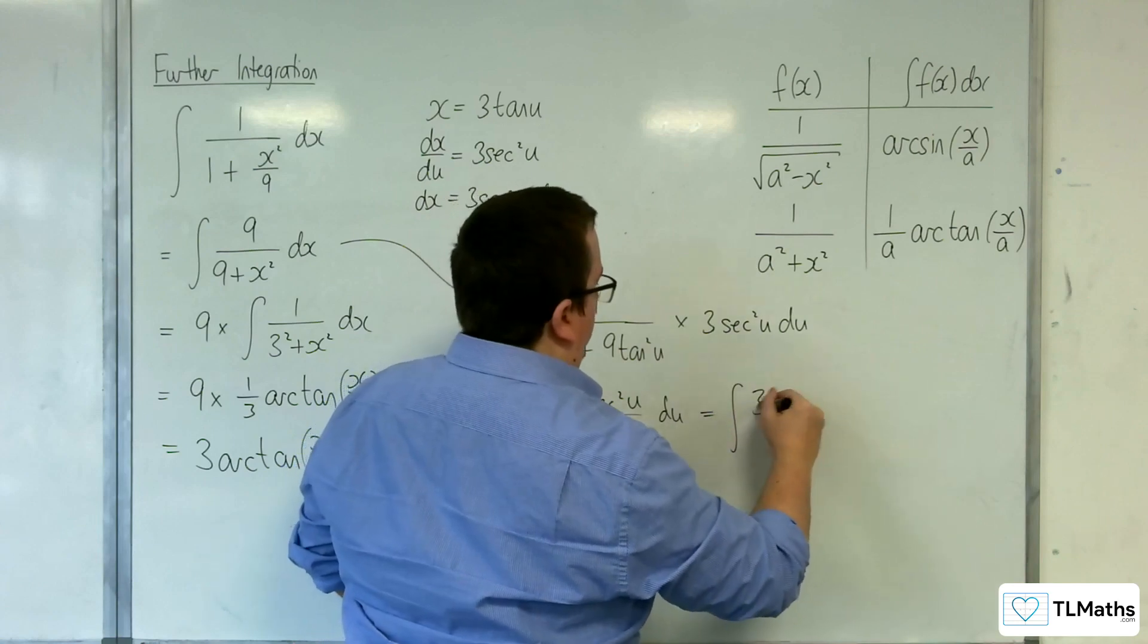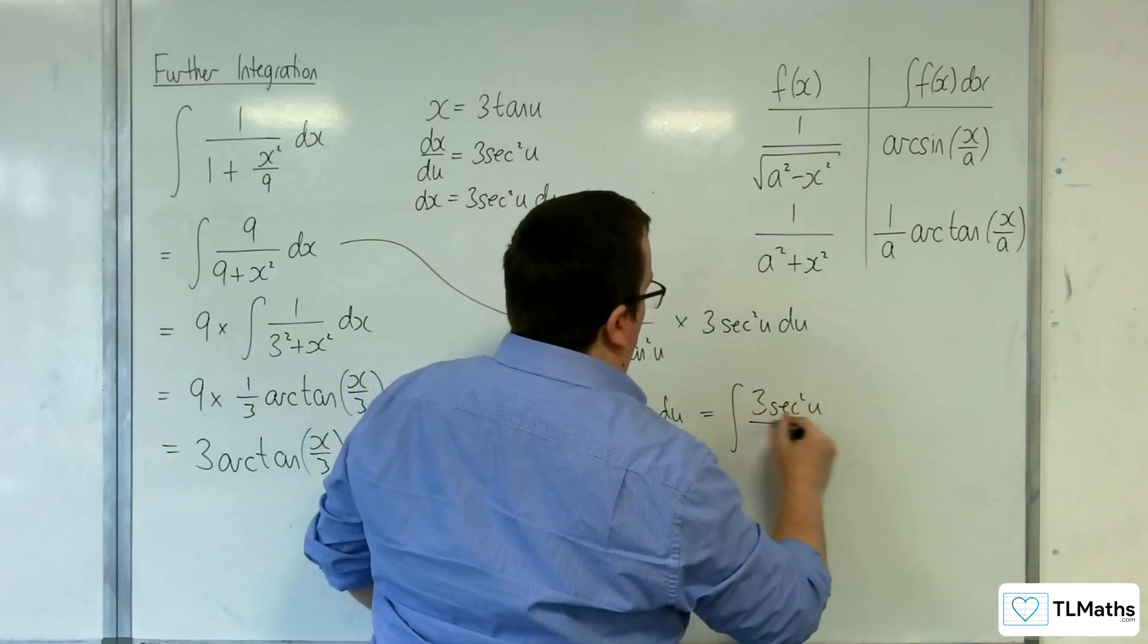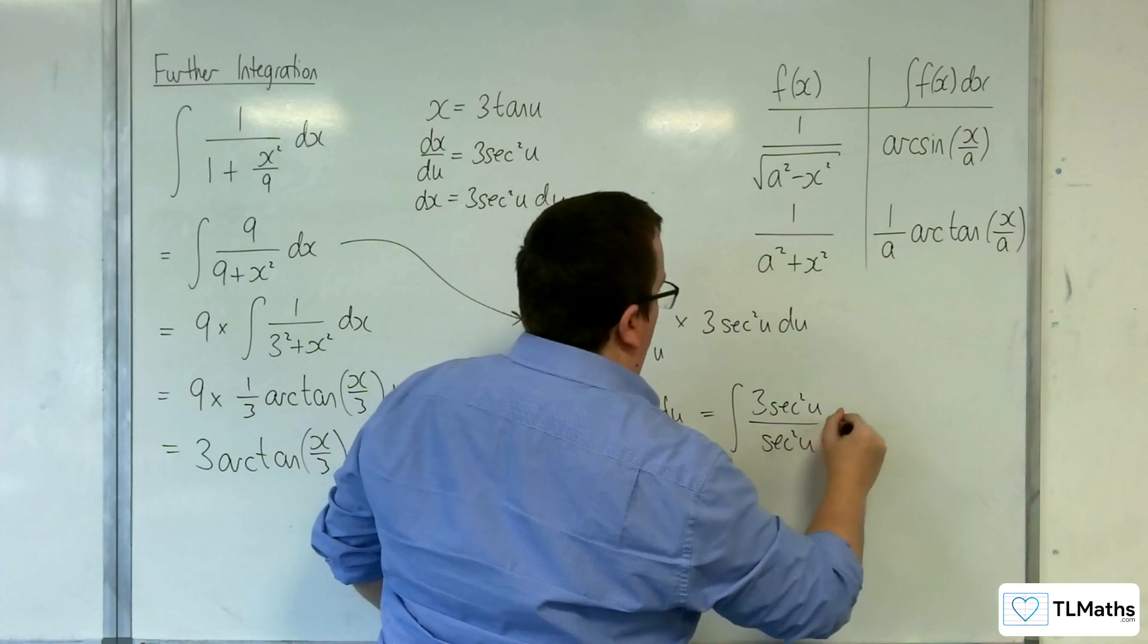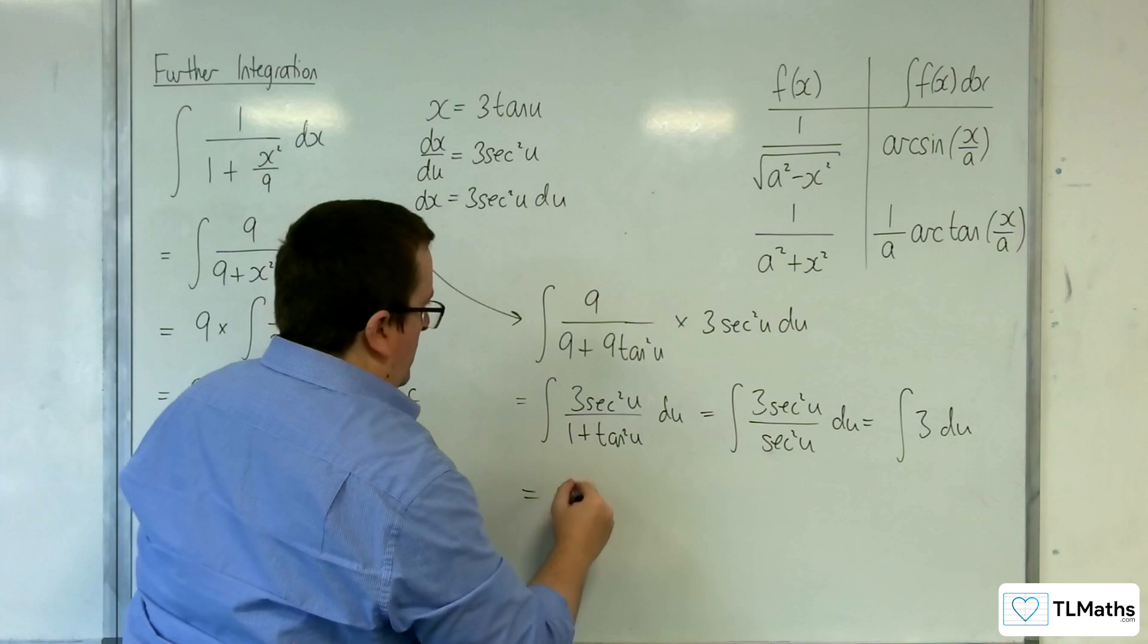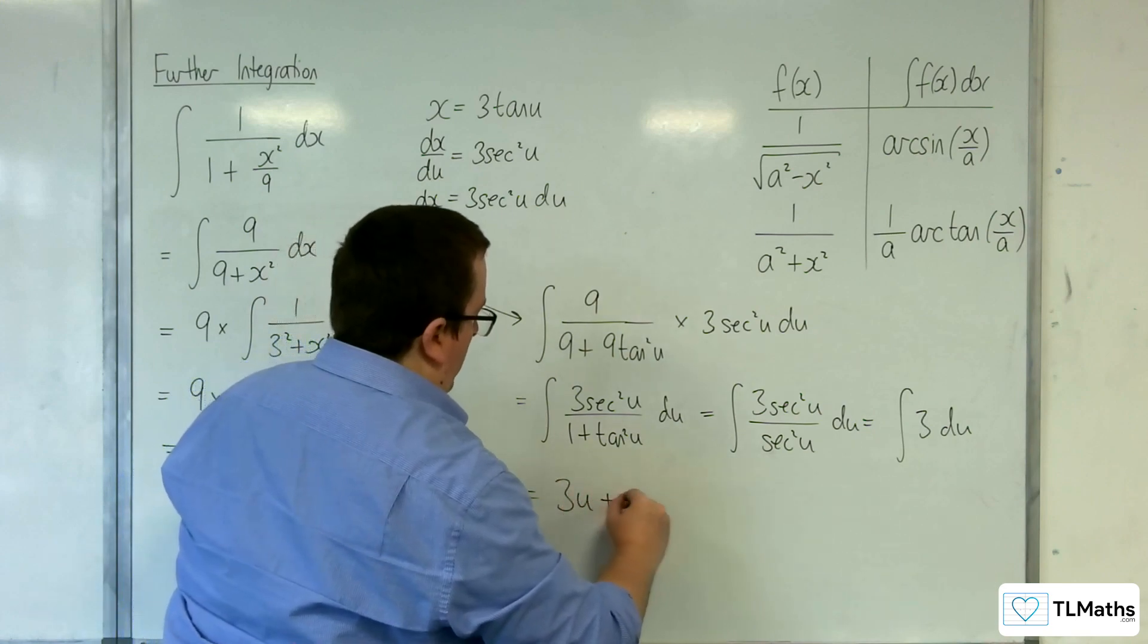Which, of course, is the integral of 3 sec squared u over sec squared u du, which is the integral of 3 du, which is 3u plus c.